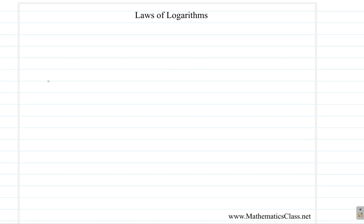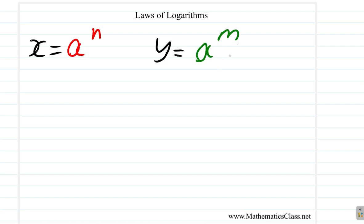Suppose, for example, you have x is equal to a to the power of n, and then y is equal to a to the power of m. Let's rewrite these in log form — these are in exponential form — let's write them in logarithmic form.